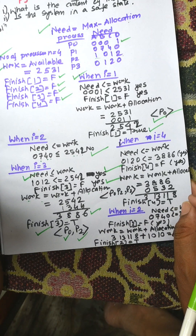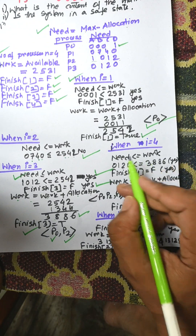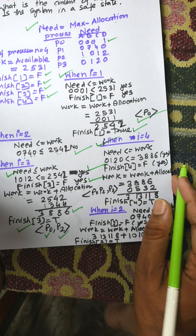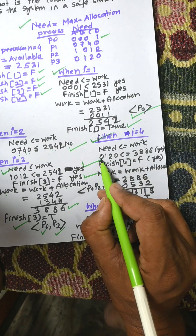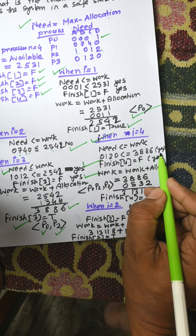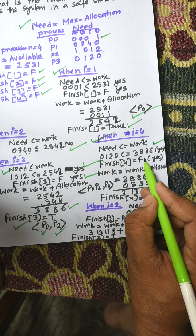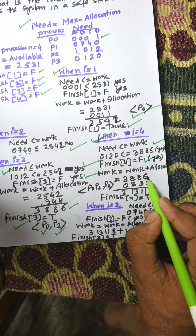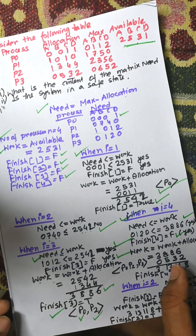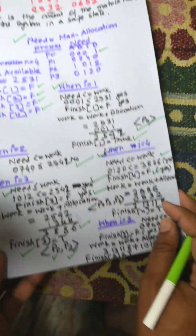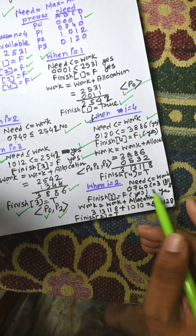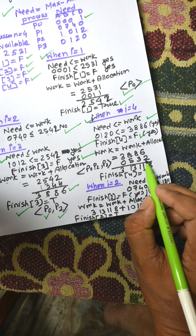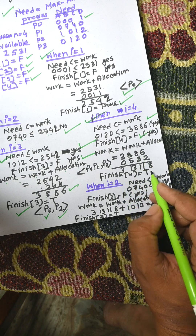When i = 4 (P3), we check Need ≤ Work. Need is 1, 0, 2, 0 and Work is 3, 8, 8, 6 — yes. Finish[3] is false, so we proceed. Work is updated: 3, 8, 8, 6 plus allocation 0, 5, 3, 2 gives new Work = 3, 13, 11, 8. Finish[3] is now true.